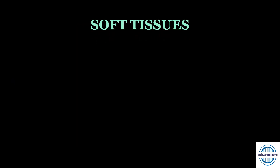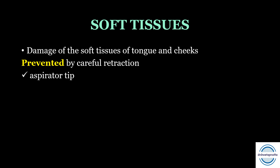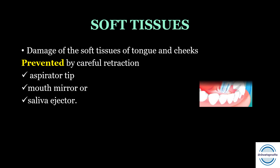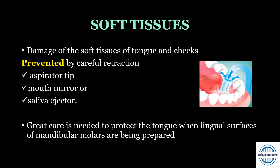Next are the soft tissues. Damage to the soft tissues of the tongue and the cheeks can be prevented by careful retraction. This can be done with the help of an aspirator tip, mouth mirror, or a saliva ejector. Special care or greater care is needed to protect the tongue when we are preparing the lingual surfaces of the mandibular molars.